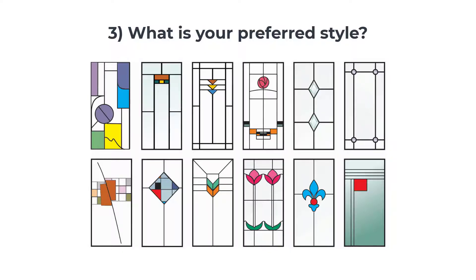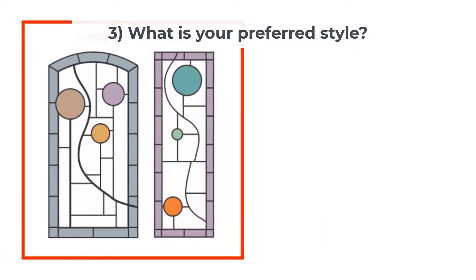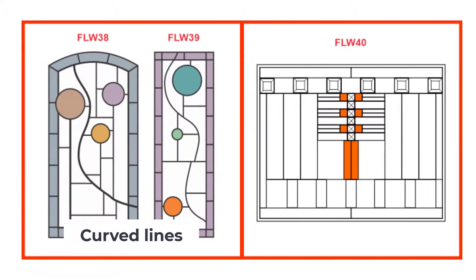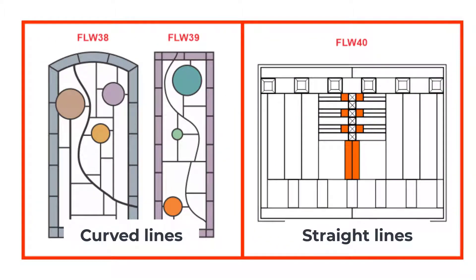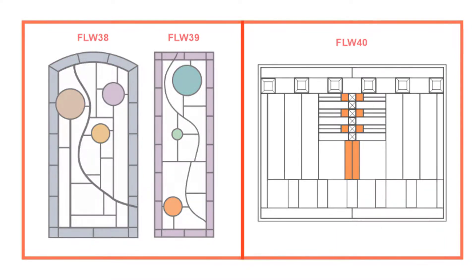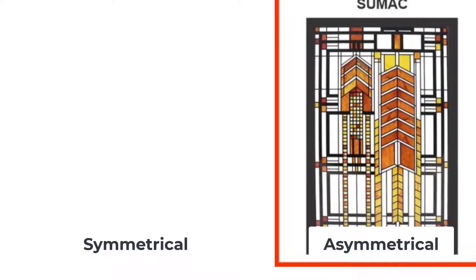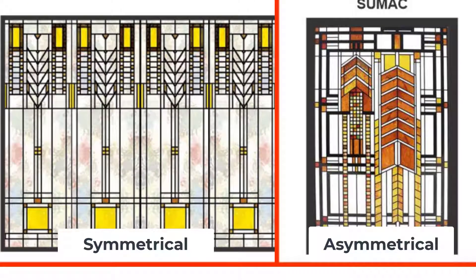Try to decide what is your preferred style. Do you like curved lines or straight lines? Curved lines are more playful and adventurous, while straight lines give a sense of stability and safety. Secondly, are you drawn to symmetrical or asymmetrical designs? Take a look at these examples and see how the asymmetrical sumac plant imparts a certain tension to the whole design, whereas the tree of life is more peaceful and stable.